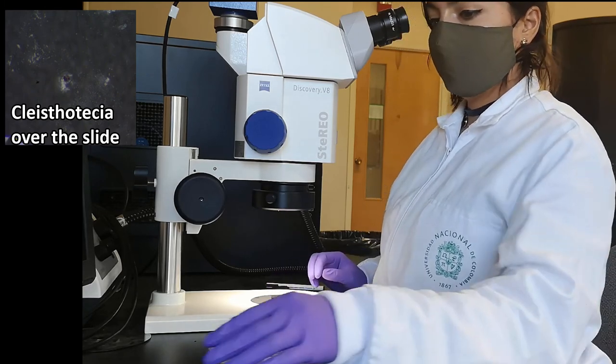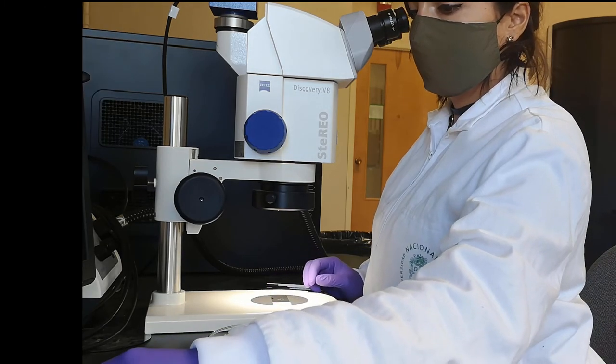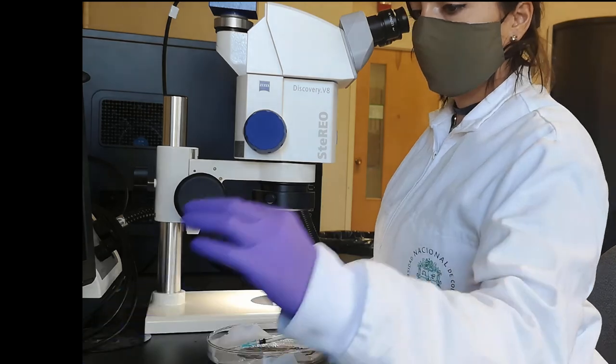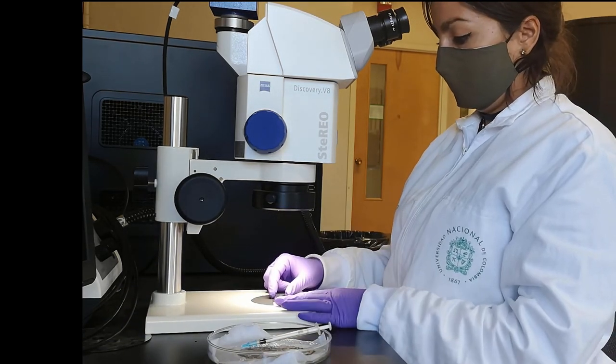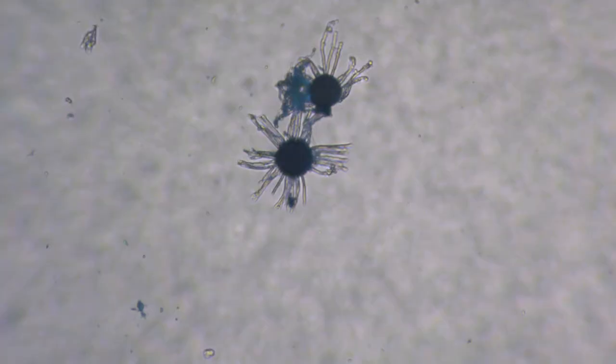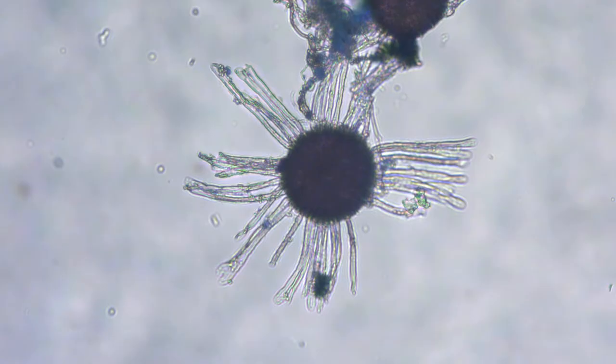Then put a cover slip and observe the slide under the microscope. Before breaking the cleistothecia, this is how you will observe them under the 4x lens. This is how you will observe the cleistothecia under the 10x lens.